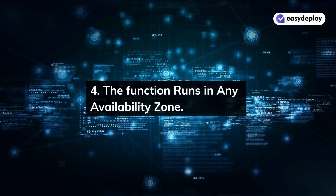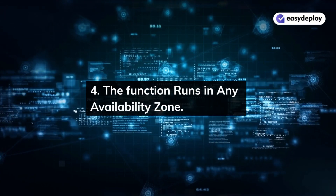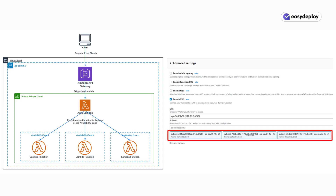The function runs in any availability zone. API Gateway will trigger the Lambda, and it will run the function in any one of the availability zones specified with the subnets.